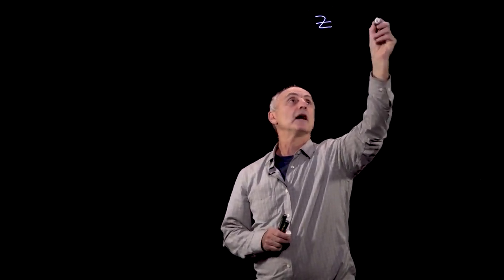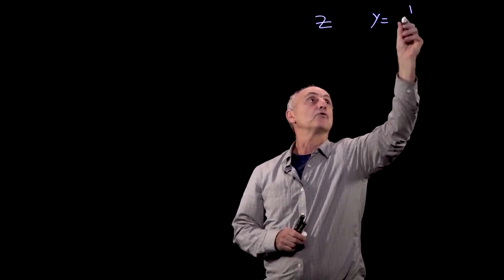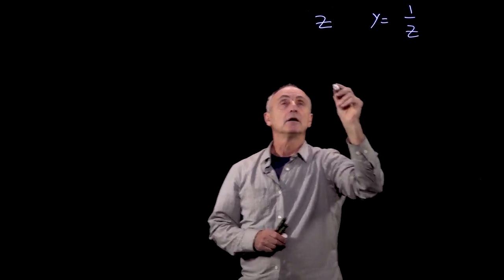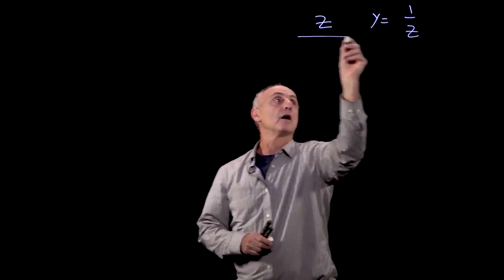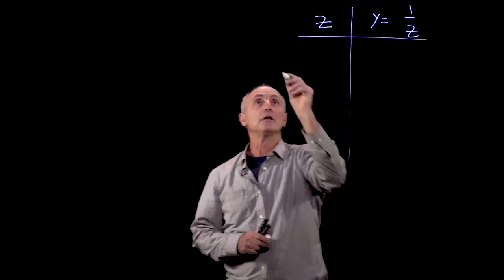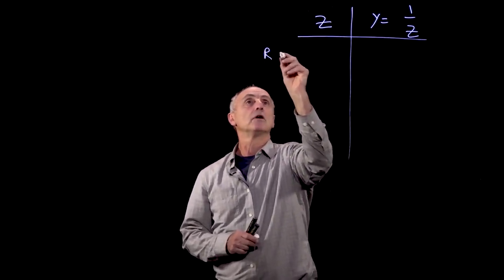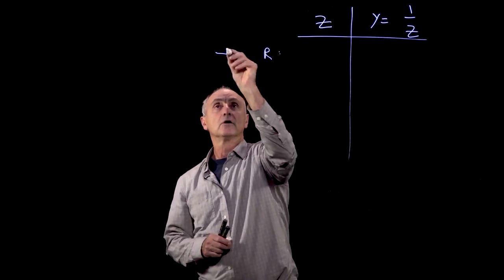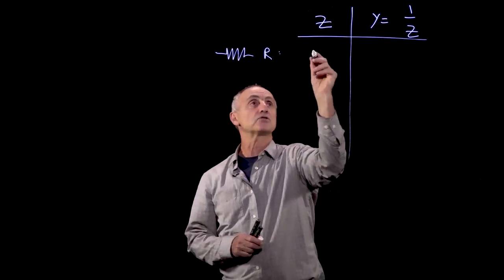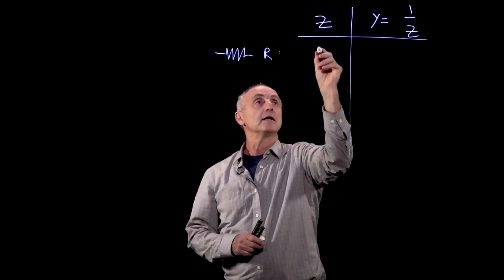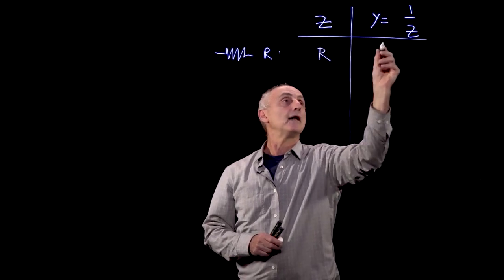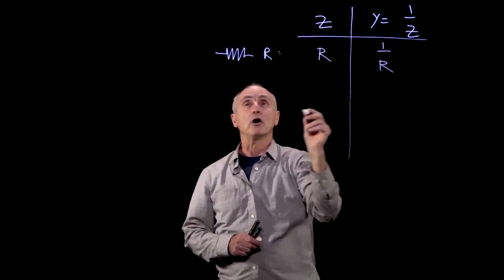Let's summarize our results for admittance and impedance for resistors, inductors, and capacitors. Remember, we have Z and Y equals one over Z. We began with a very simple element, a resistor. The impedance was R, and the admittance was one over R.